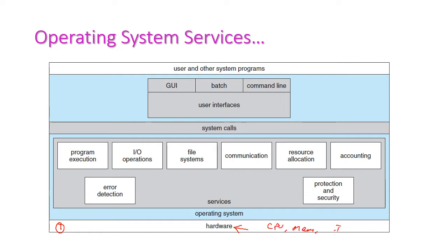Memory, IO devices, disk systems, and other physical devices come under the hardware layer. On top of the hardware layer we have the operating system layer, and on top of that we can install all the user programs and system programs. So the operating system comes between the user programs and the hardware.